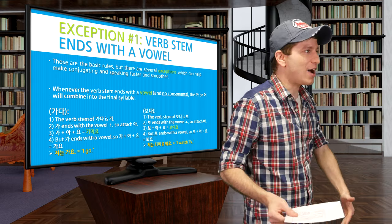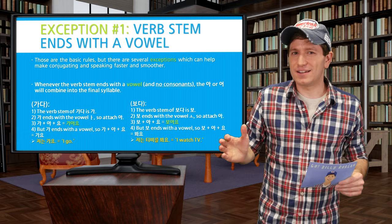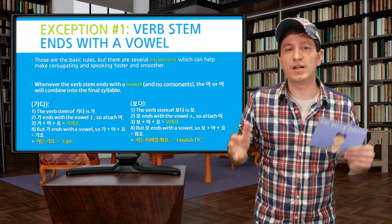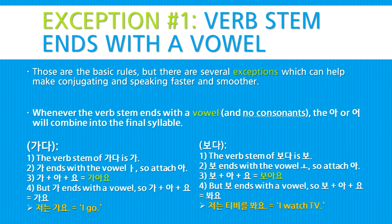Our next example is 보다 (to see). The verb stem is 보, which ends with the vowel 오, so we attach 아: 보 + 아. Since 보 ends with a vowel and no other consonants, 보아 combines to become 봐. Then we attach 요 and get 봐요. Sentence: 저는 TV를 봐요 — I watch TV.